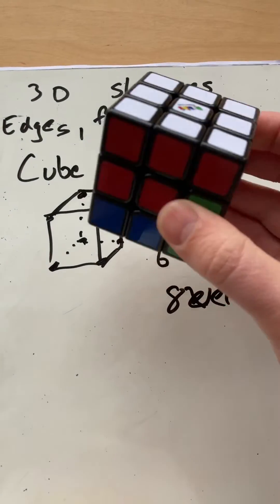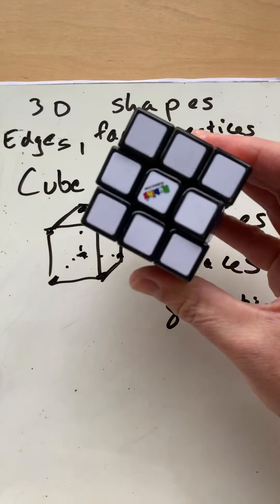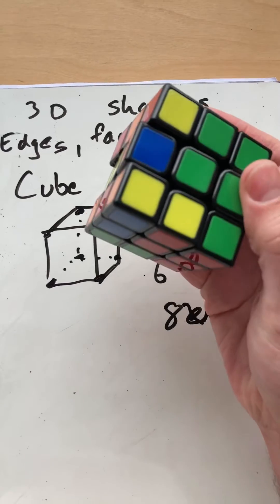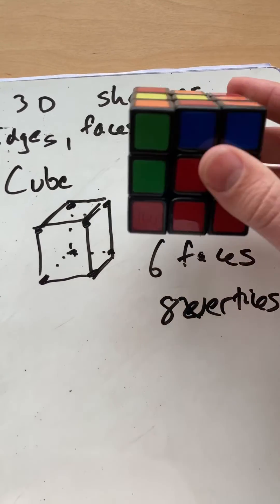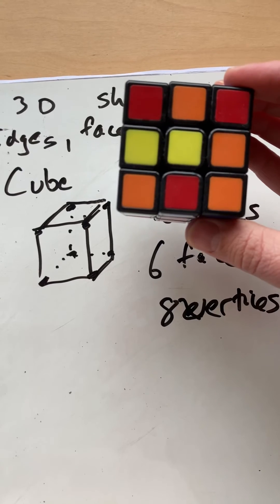And let's see that in a cube at home, an unmade Rubik's Cube. We know that there are 6 faces, and you can see there are 12 edges and 8 vertices.